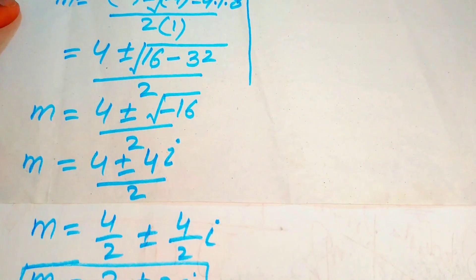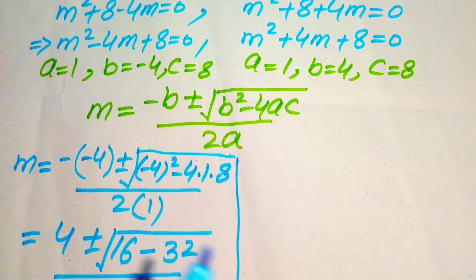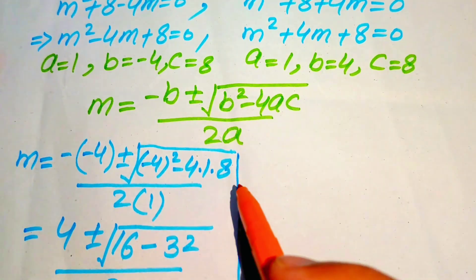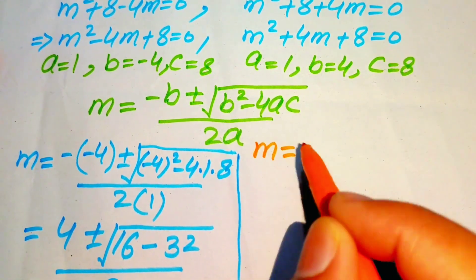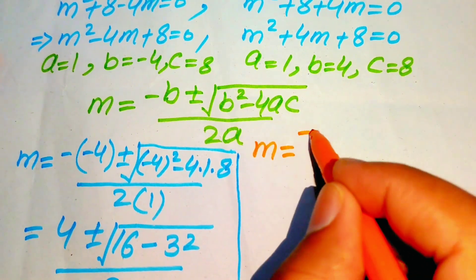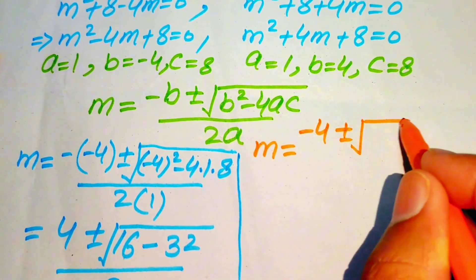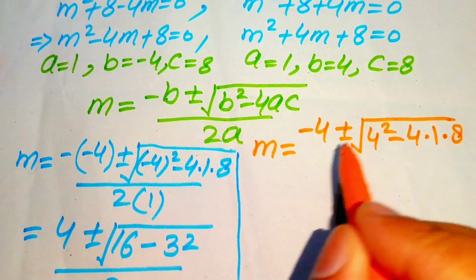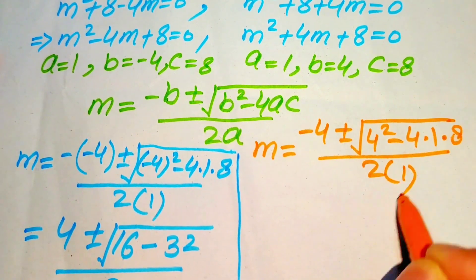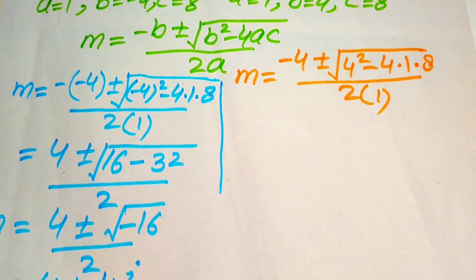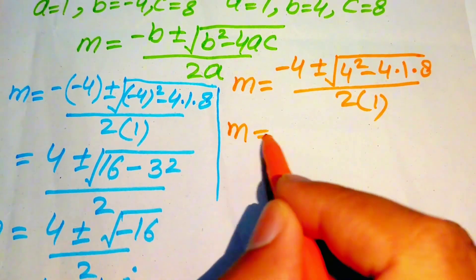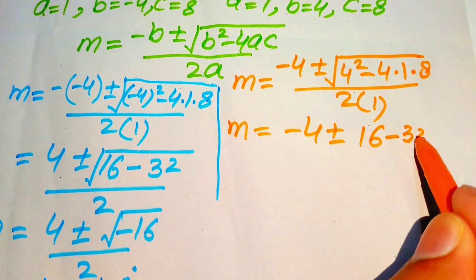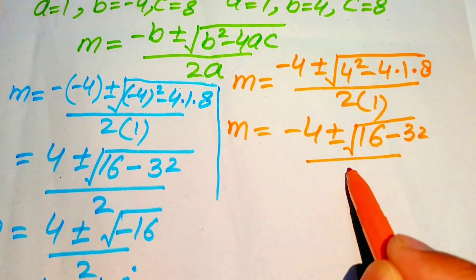To find the other roots, we solve the second case. Substituting a equals 1, b equals 4, c equals 8 into the quadratic formula: m equals minus 4 plus or minus square root of 4 squared minus 4 times 1 times 8, divided by 2. Simplifying: 4 squared equals 16, and 4 times 8 equals 32, so we get square root of 16 minus 32 divided by 2.